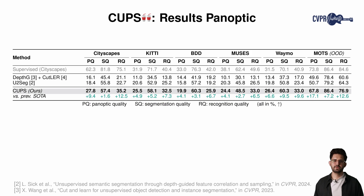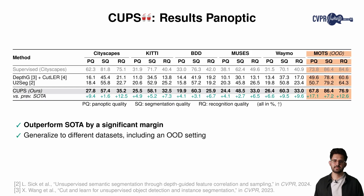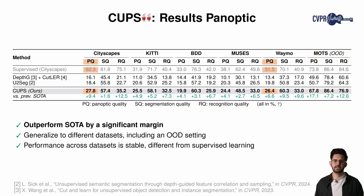We train CUPS on pseudolabels obtained on the Cityscapes training sequences and evaluate on the Cityscapes validation set, as well as five different datasets showcasing generalization beyond the training data. CUPS outperforms the state-of-the-art by a significant margin and generalizes to different datasets, including an out-of-distribution dataset. Notably, the accuracy between datasets is stable, in contrast to the supervised equivalent trained on Cityscapes, which performs well on the training domain but breaks under a slight domain shift.